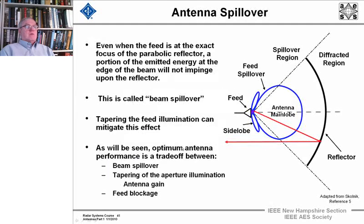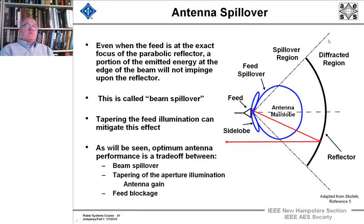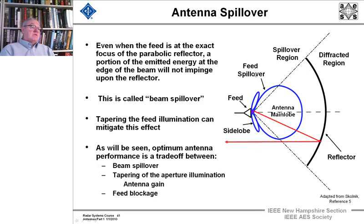Now to talk in detail about spillover and blockage. Even when the feed is exactly at the focus of the parabolic reflector, some energy at the edge will not impinge upon the reflector — it spills over. That's the spillover region. Energy also diffracts around the edge. The beam width of the main lobe is shown here, and the energy that spills over goes outward. We can taper the feed illumination across the aperture to mitigate this effect. Some energy also goes out into the side lobes, which also counts as spillover.